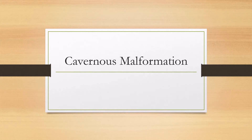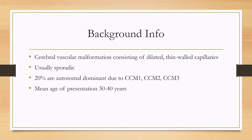Let's talk about cavernous malformations. These are cerebral vascular malformations consisting of dilated thin-walled capillaries. They are usually sporadic; however, about 20% of them are autosomal dominant and can be associated with mutations in the CCM genes — CCM1, CCM2, and CCM3. The average age of presentation is around 20 to 30 years old.